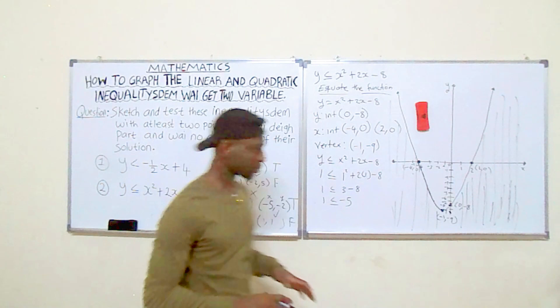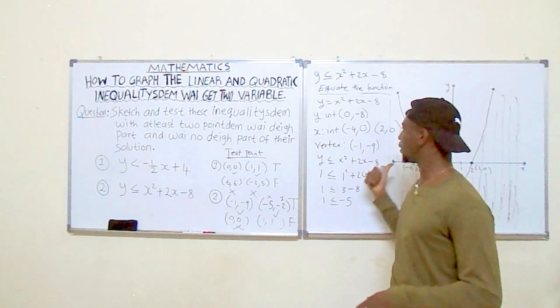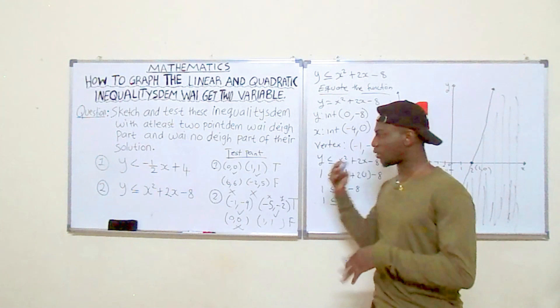We have now sketched the graph of both functions, selected two points inside each shaded region that satisfy the inequality, and shown two points outside that do not satisfy it. This completes the question. See you again next time.